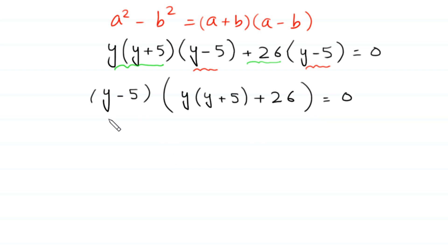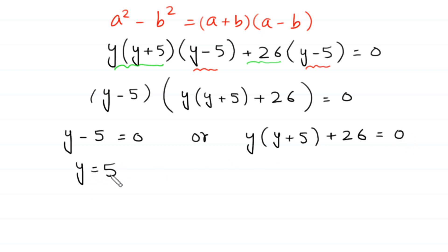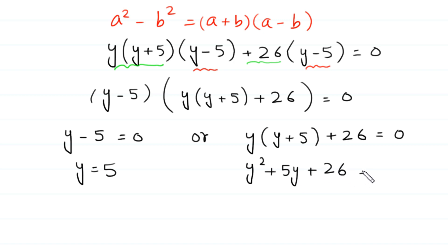From here, either (y minus 5) equals 0, or y times (y plus 5) plus 26 equals 0. From the first factor, y is equal to 5. From the second factor, we distribute y to get y squared plus 5y plus 26 is equal to 0.